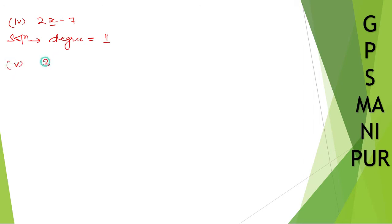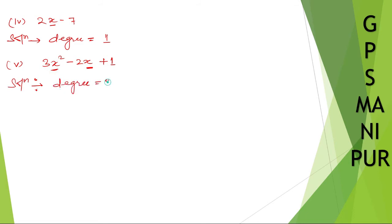Roman number 5: 3x squared minus 2x plus 1. Here also if you look very carefully, you can see the highest power of the variable is 2. So degree is 2.